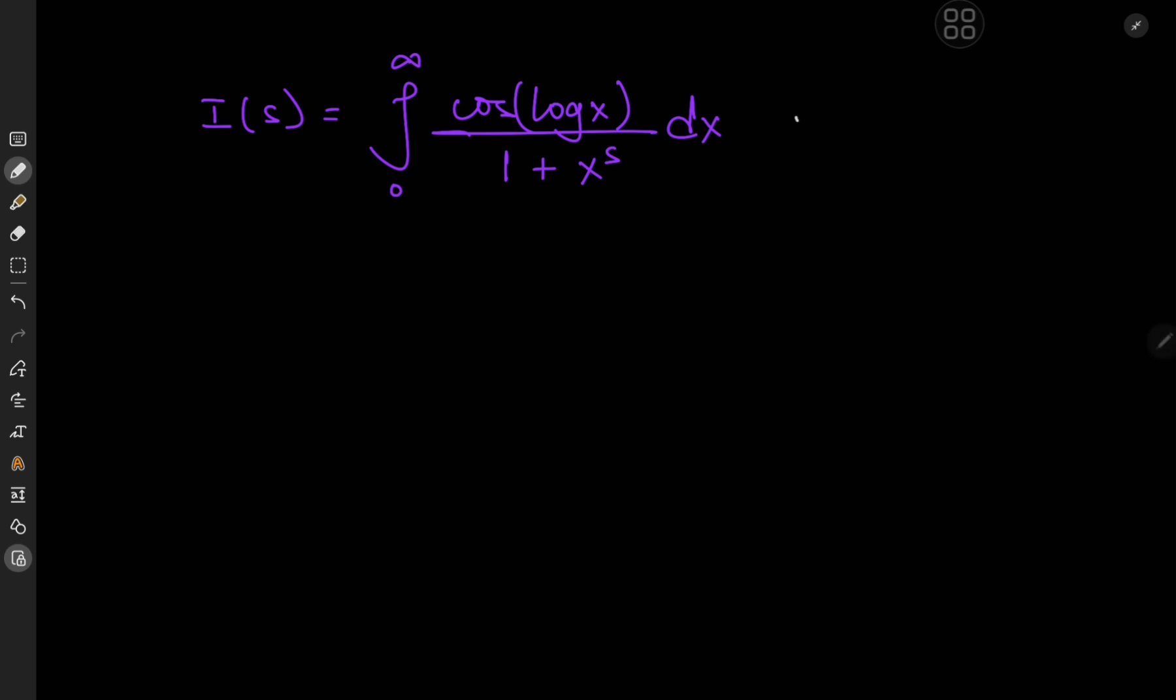s here is a complex number with real part greater than one. So we have the integral from zero to infinity of cosine log x divided by one plus x to the s. The first thing I'd like to do here is translate this cosine log x term using some complex analysis.